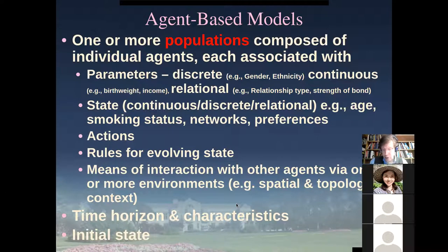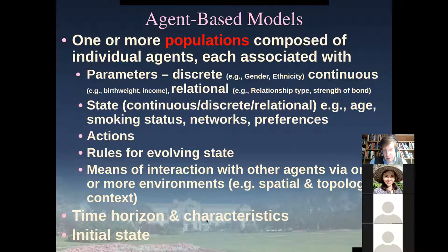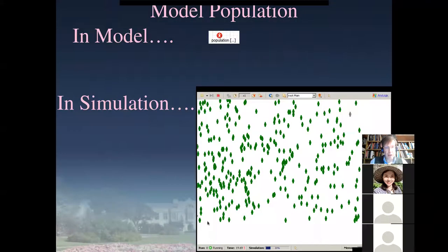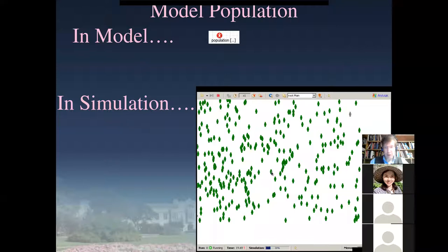This is absolutely essential to the motivations for agent-based modeling: agents have means of interacting with other agents and with the broader environment. They are situated in some context. There's a time horizon and characteristics of that, and some initial state. In our model, we'll have a definition of a population in the simulation, and when we simulate the model, we'll have all these different agents.